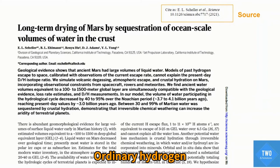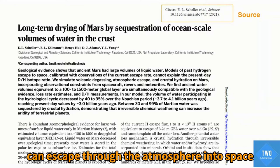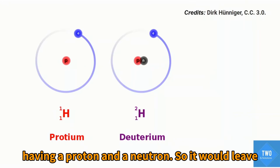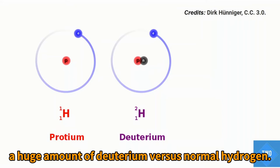Ordinarily, hydrogen can escape through the atmosphere into space compared to deuterium having a proton and a neutron, which would leave a huge amount of deuterium versus normal hydrogen.